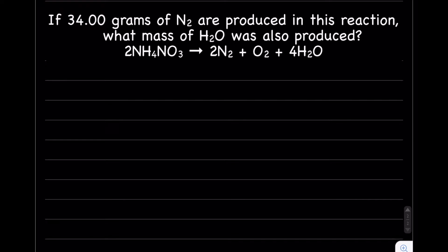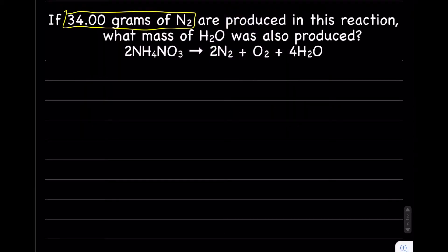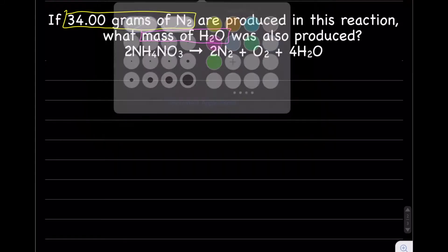If 34 grams of N2 are produced in this reaction, what mass of H2O was also produced? So the very first thing we should do is identify our known and our unknown. The known is something that we have a number and a unit associated with. So our known is 34 grams of nitrogen. Our unknown is what we're looking for, and that is the mass, which is grams, of H2O.